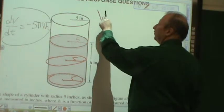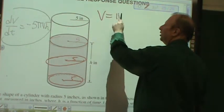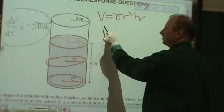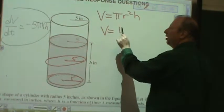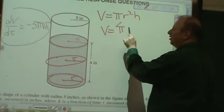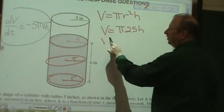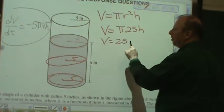So let's look at what I have. V equals πr²h. Since the radius is a constant, V equals π(5²)(25)h. Or, if that's the case, V equals 25πh.